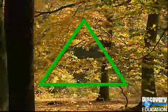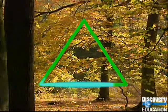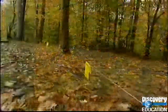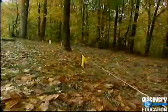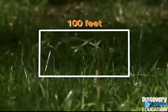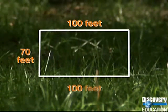For simple polygons, such as this triangle, the perimeter is the sum of the lengths of the sides. Let's figure out the field's perimeter, which would equal the length of the fence around it. It's 100 plus 70 plus 100 plus 70.